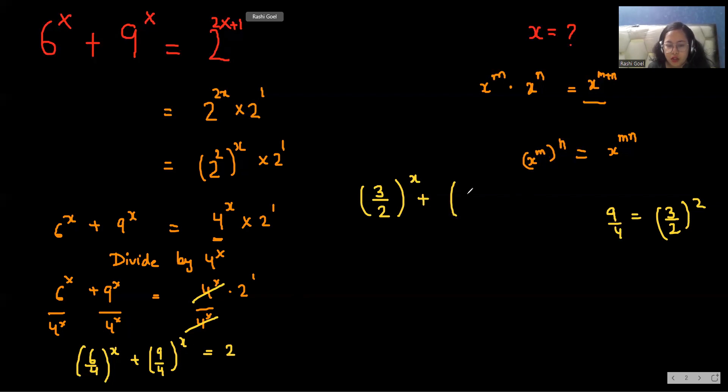We can write (3/2)^2, and whose one more power is x, equals 2. Now, as we know that (x^m)^n equals x^(mn), or we can write it as ((3/2)^x)^2. It makes the same thing because 2 multiply x is 2x, and x multiply 2 is as well 2x.